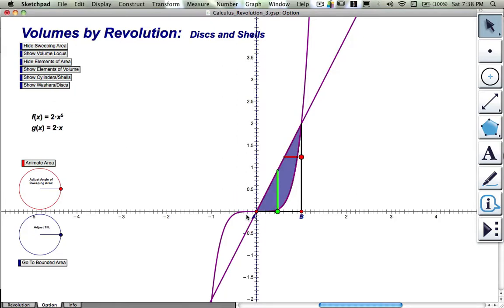2x to the fifth is the curve, the polynomial fifth degree. 2x is the line that you see. And we could solve each of these for x as well, so we could use y to integrate the area.